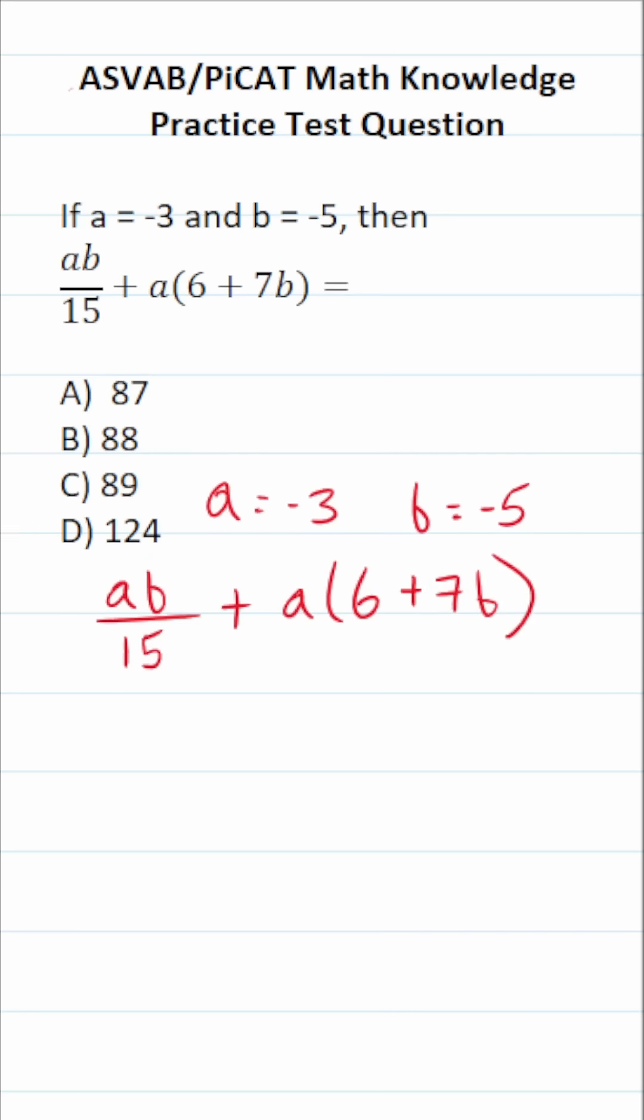All right, so we're going to let A be negative 3 and B be negative 5. Let's start by plugging those values in. This becomes negative 3 times negative 5 over 15 plus negative 3 times 6 plus 7 times negative 5. And as you can see, I like to put the letter variables that I'm plugging in using parentheses because that helps me keep the work very nice and neat.